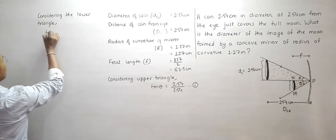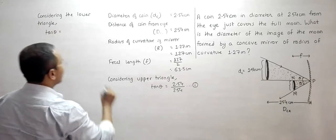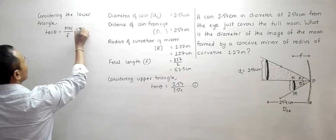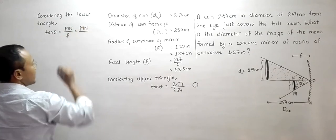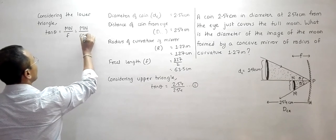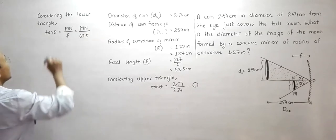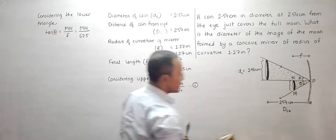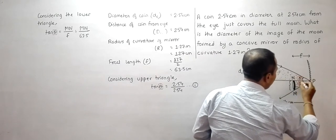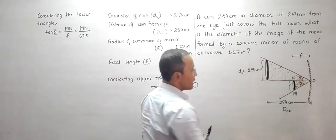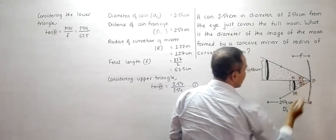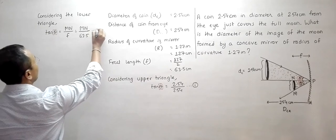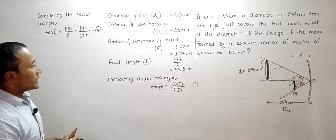Considering the lower triangle, we have tan θ = MN / EF = MN / 63.5. This is equation number 2. The two angles are equal because the angle of incidence at the mirror must equal the angle of reflection.